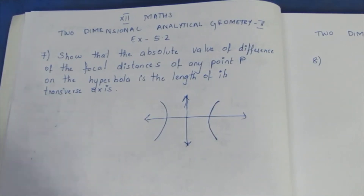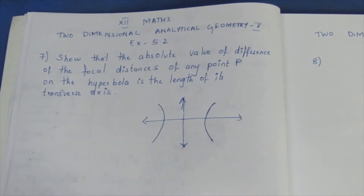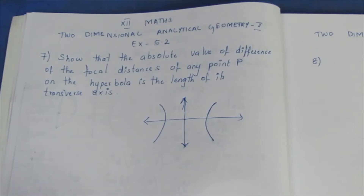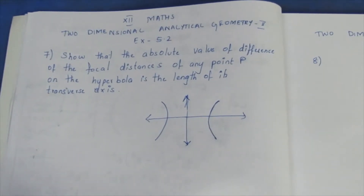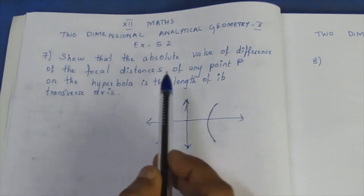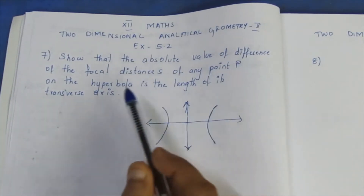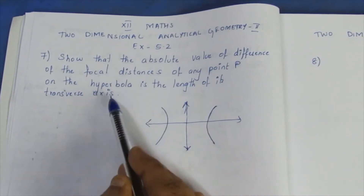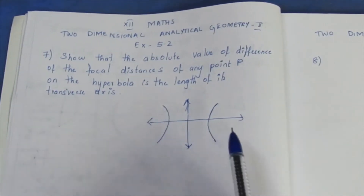Hello viewers, I am Maitri. In 12th standard, 2 Dimensional Analytical Geometry 2, Exercise 5.2, 7th sum. The question is: Show that the absolute value of the difference of the focal distances of any point P on the hyperbola is the length of its transverse axis.